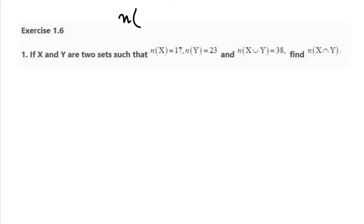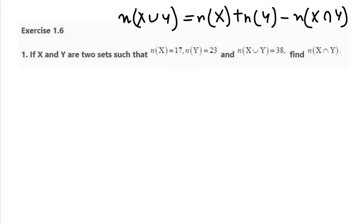The formula is n(X union Y) equals n(X) plus n(Y) take away n(X intersection Y). This is the formula which has been used in this whole exercise. Let's see how to apply this.